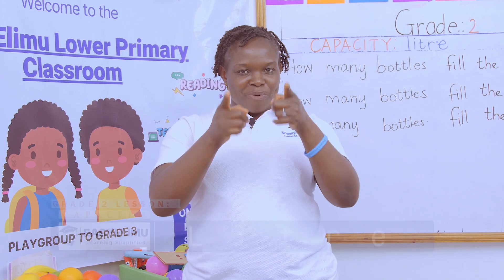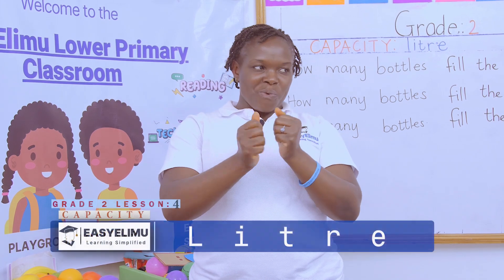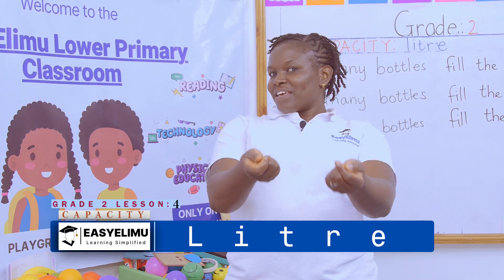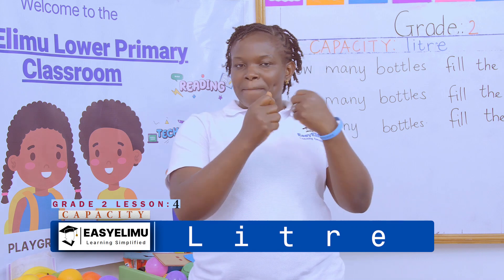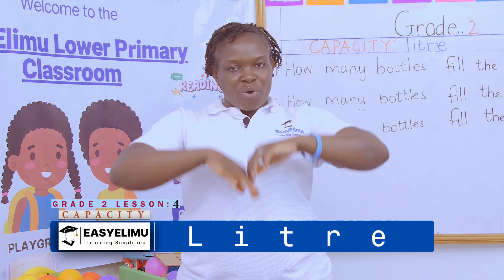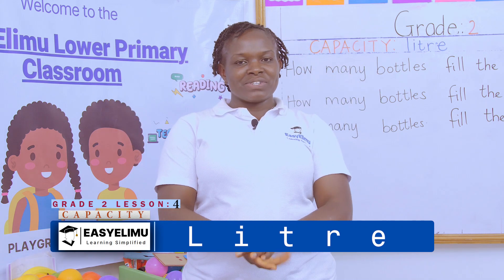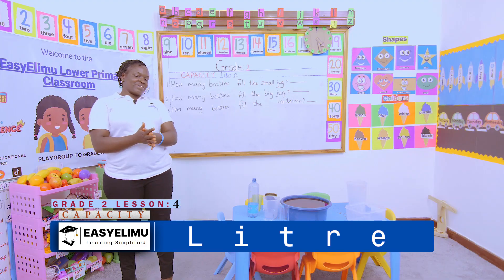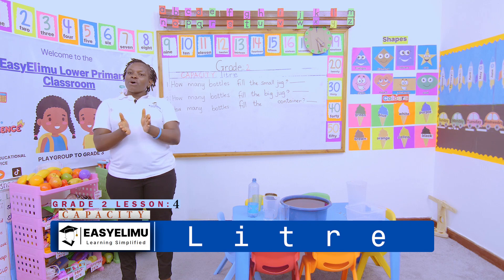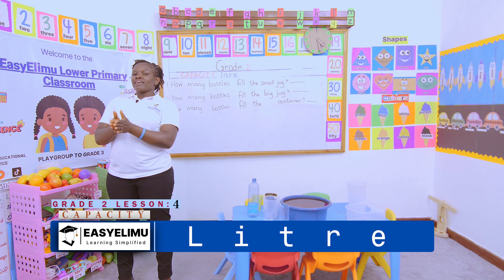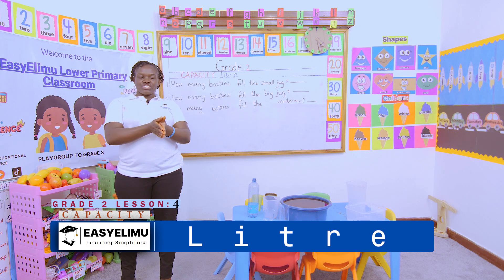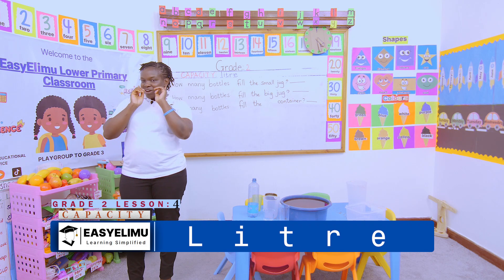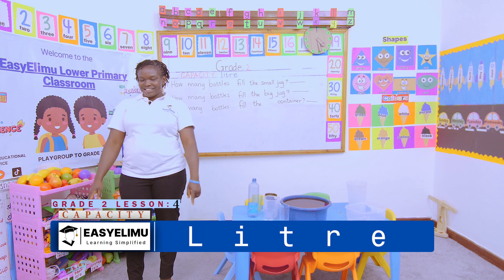My mother and your mother were washing clothes. My mother gave your mother a piece of clothes. Which color was it? Teacher, we like the orange. O-R-A-N-G-E. So you are out of this game.